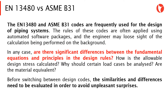The EN 13480 and ASME B31 codes are frequently used for the design of piping systems. The rules of these codes are often applied using automated software packages, and the engineer might lose sight of the calculation being performed in the background. In any case, are there significant differences between the fundamental equations and principles in the design rules?